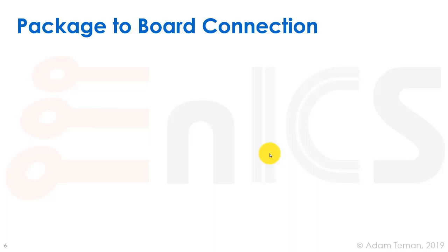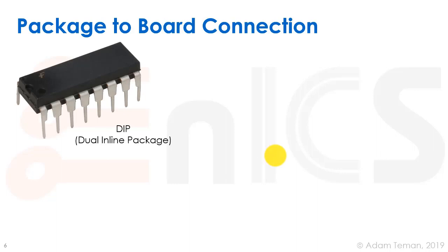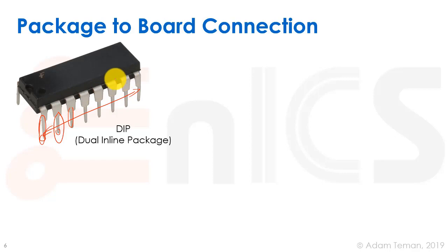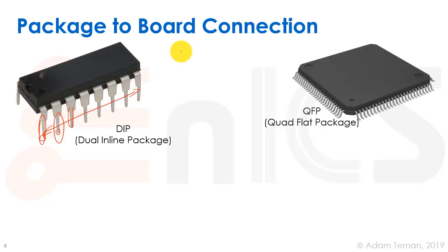Now let's discuss how the package itself connects to the board. The original and cheapest type of package is called the DIP — the Dual Inline Package. It has two rows of pins, sometimes called a 'juke' in Hebrew because it looks like a little cockroach. These pins stick into holes in the board and are soldered on the back. However, this package has only a relatively low number of pins — for example, 16 — so it's very limited in its IO bandwidth.